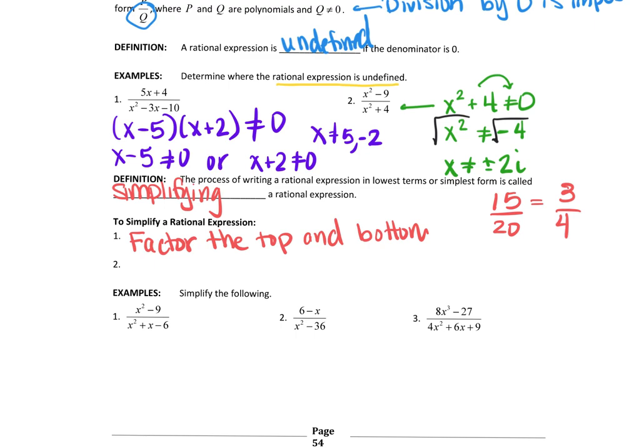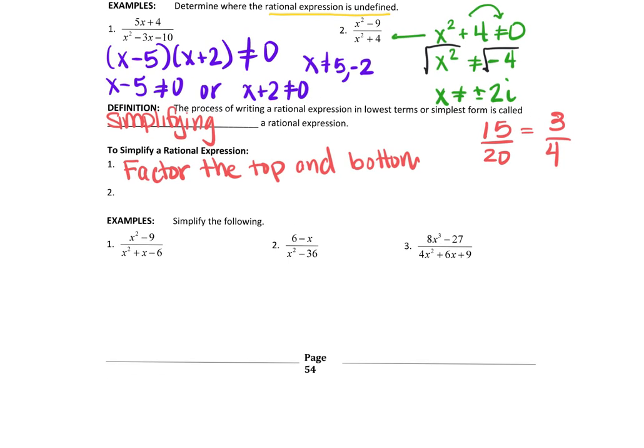So here, for instance, if you look here, x squared minus 9. Well, we can factor that into x minus 3, x plus 3. And then we factor the bottom. The bottom factors into x squared plus x minus 6 factors into x plus 3, x minus 2.